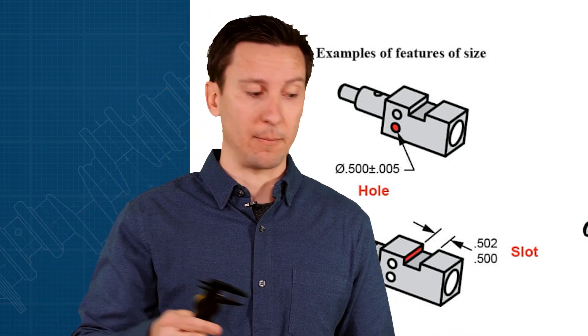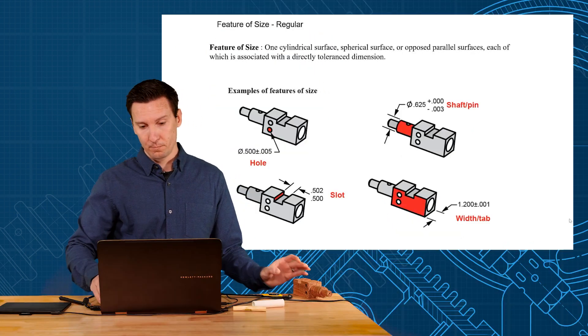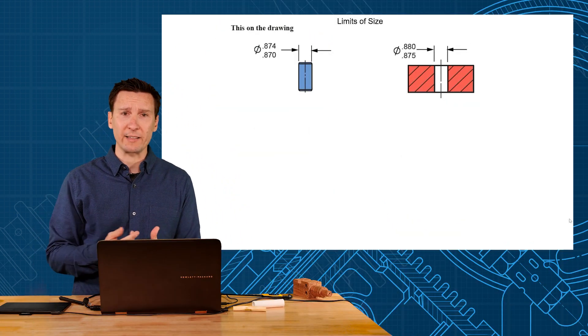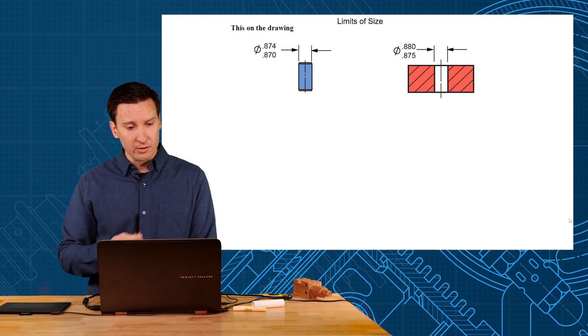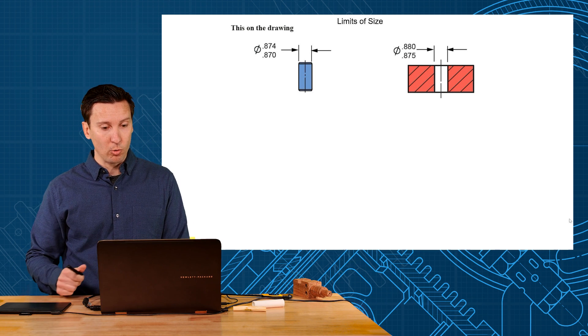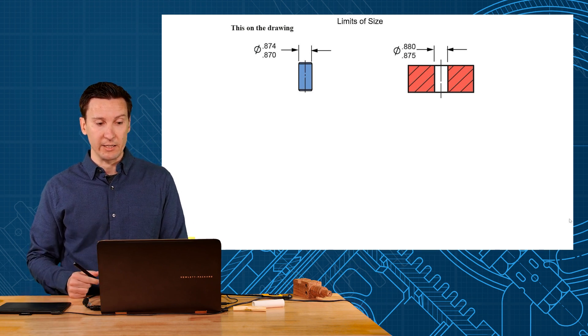Let's talk about two classic features of size: a pin and a hole. Say we have a pin called out as .870 to .874 and a hole identified .875 to .880. You have one supplier make one part and another supplier make the other part, and we want to make sure they interchange.